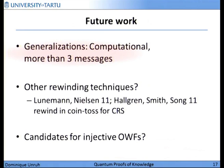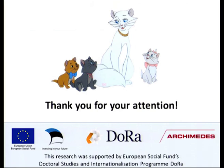For future work: generalizations like considering the computational setting — this was only in the proof setting, not for arguments — and things that are not sigma protocols but have more messages, which I think are pretty simple but haven't done. We will also look at other rewinding techniques; two follow-up papers had different approaches to solving proofs of knowledge where they rewind in the coin toss rather than the extractor. And of course, we would like candidates for injective one-way functions, which is needed not only for my work but also for prior results. Thank you for your attention.